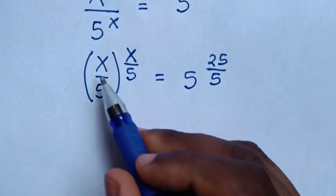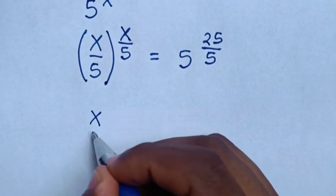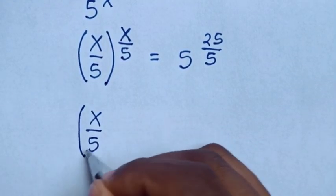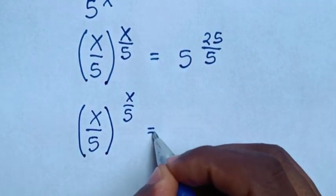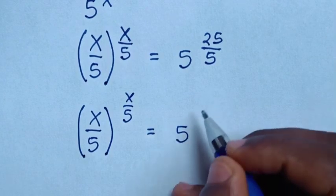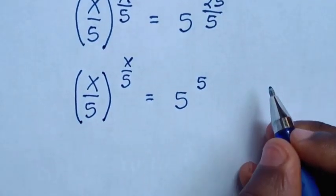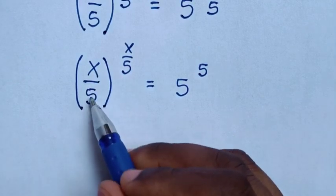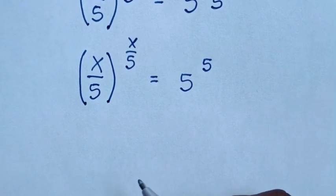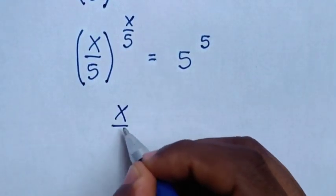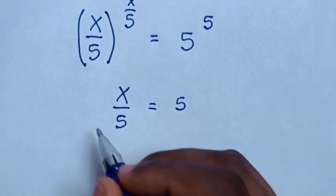Then it will be the base of x over 5, power of x over 5. So from x over 5 bracket, power of x over 5 is equal to 5 power of 25 divided by 5, which is 5 power of 5. Now here we'll compare the bases: x over 5 is equal to 5, and the power x over 5 is equal to 5.